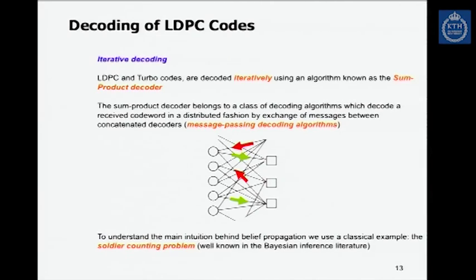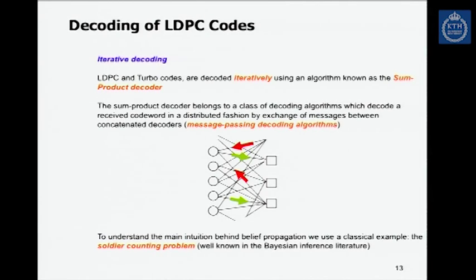One important property of LDPC codes is that they are quite simple to decode using simple strategies. In particular, we can use iterative decoding. This iterative decoding is known as the sum-product decoder. Essentially, the decoder exchanges information along the edges from the variable nodes on the left to the check nodes on the right, and then back from the check nodes to the variable nodes. By properly choosing these messages, it is possible to decode the transmitted code word.